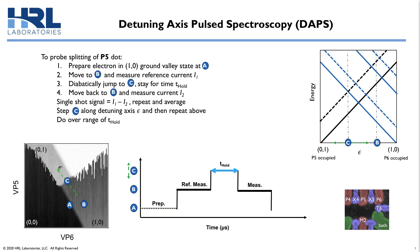This plot on the lower left is the charge stability diagram. The black region is both dots empty, the dark gray region is a single electron in P6, and the light gray region is a single electron in P5. A, B, and C mark the key locations in voltage space for DAPS. Step one is to sit at A, the P6-01 charge boundary, and prepare our electron in the P6 ground valley state. Step two is to move to B, squarely into the 1-0 charge cell, and measure the reference current, which is the current associated with a single electron in P6. Now I want to move to energy versus detuning so that we can understand what happens in energy space as we're moving around in voltage space.